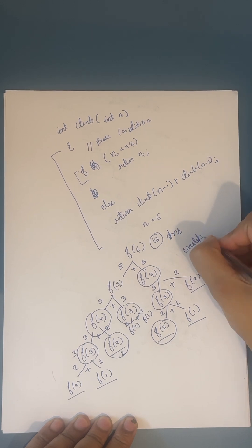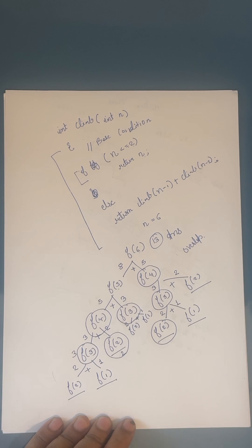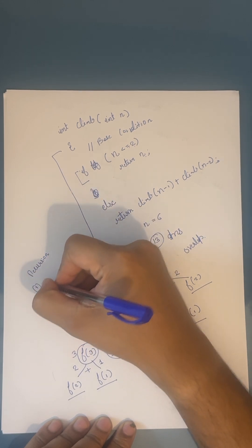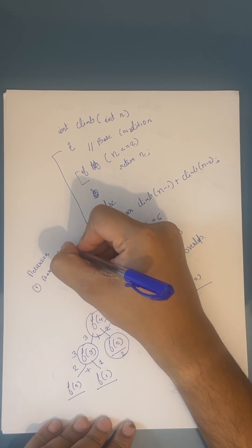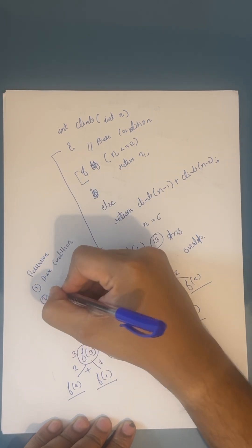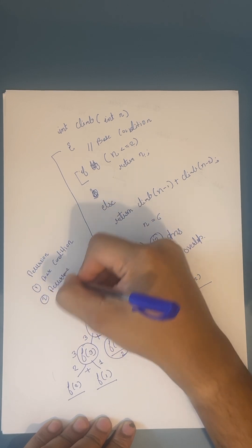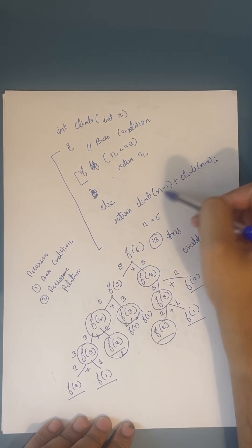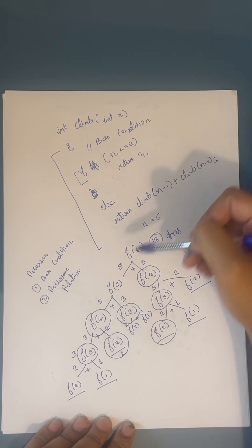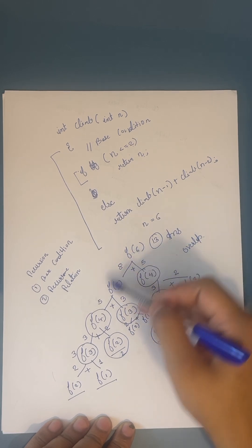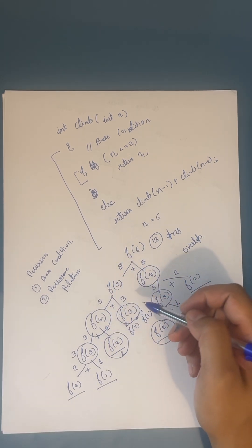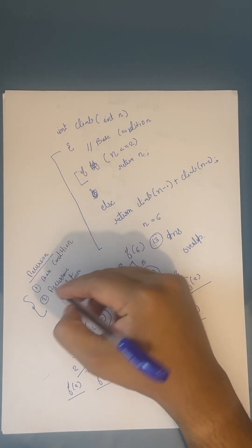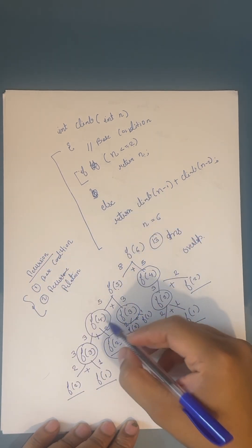To get a recursion solution, first there should be a base condition, and second there should be a recurrence relation. The recurrence relation here depends on the previous two values — this result depends on the previous two. So we can create a recurrence relation, and these are the two requirements for a recursive problem.